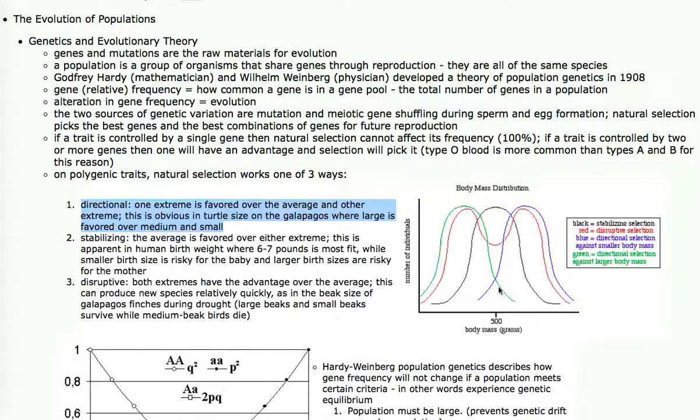If natural selection favored lighter organisms, then you would have the green graph here, where the average individual from the peak of the green graph would be lighter than the average individual in the original population.